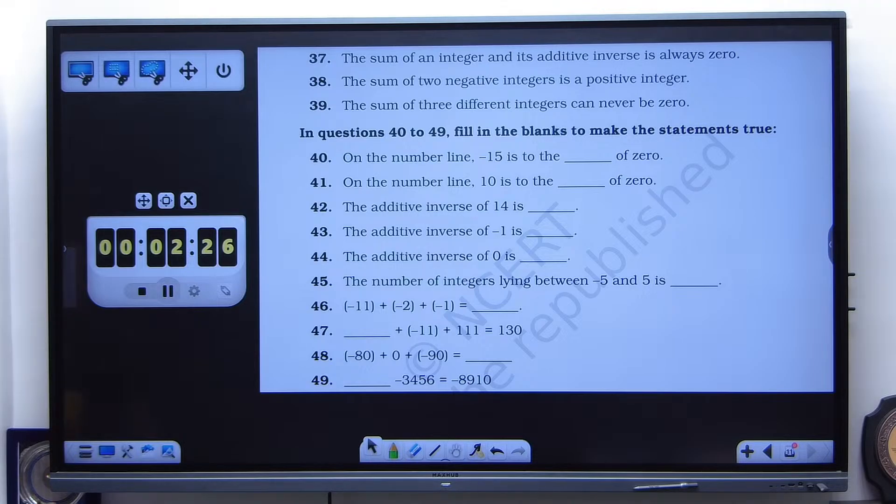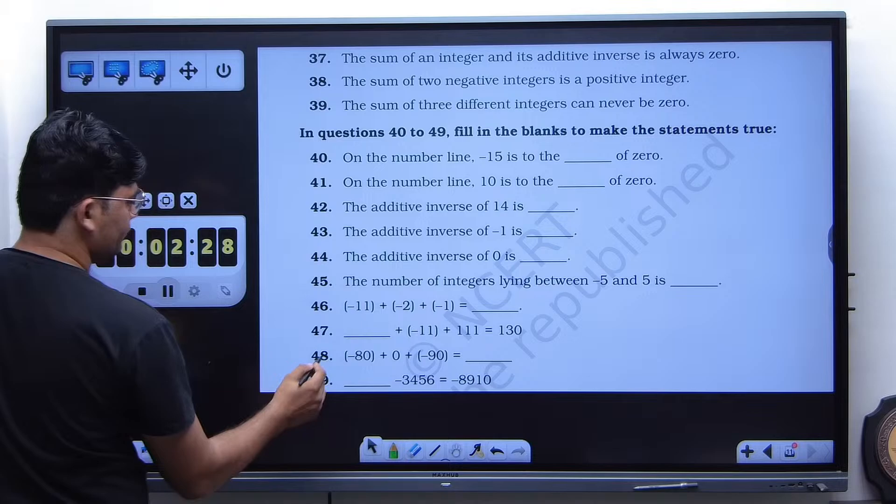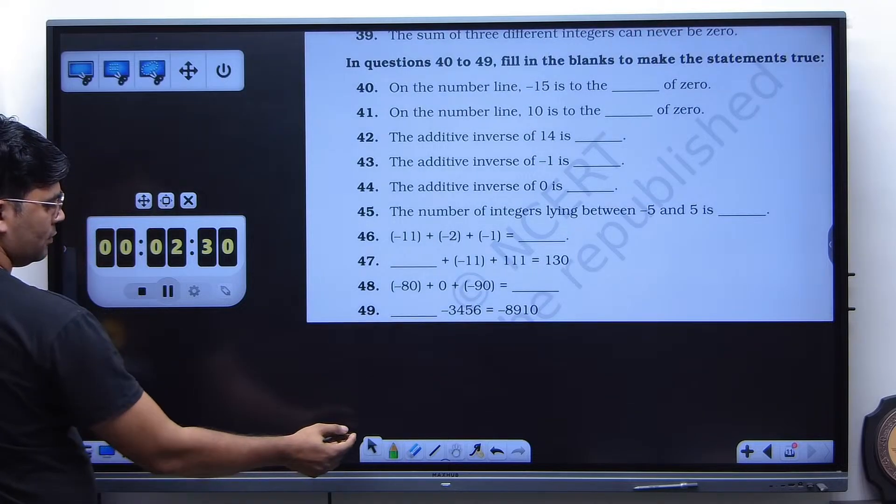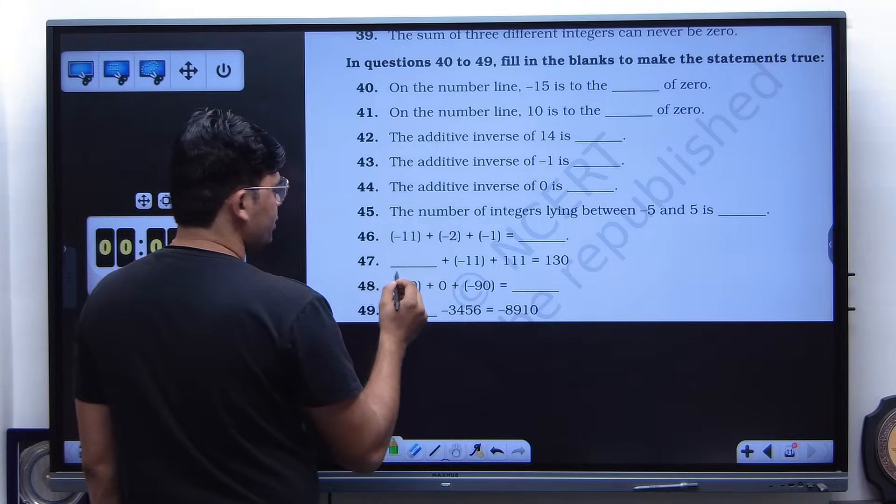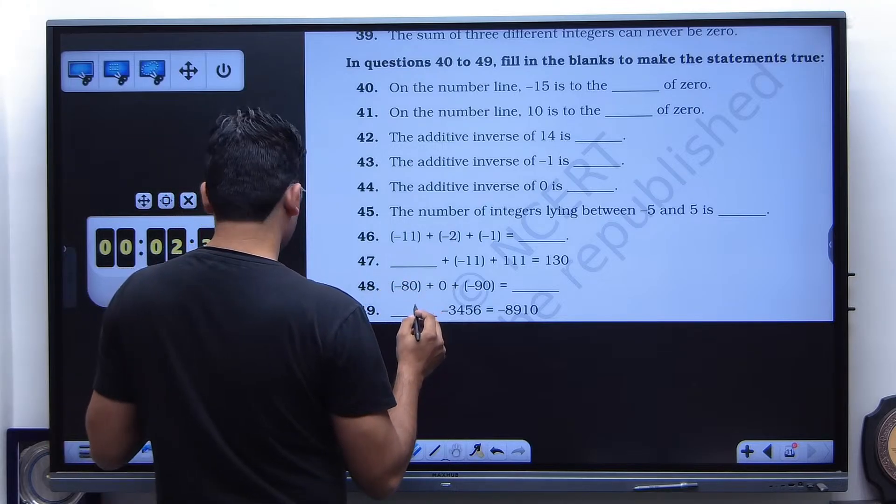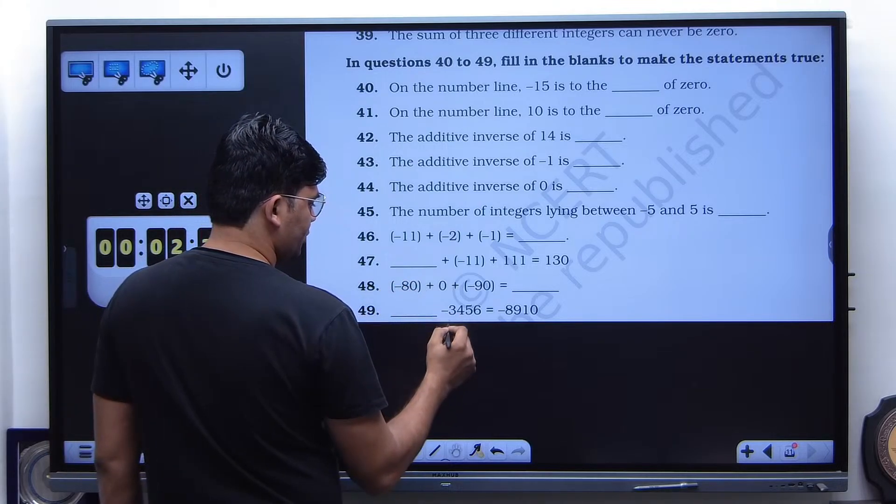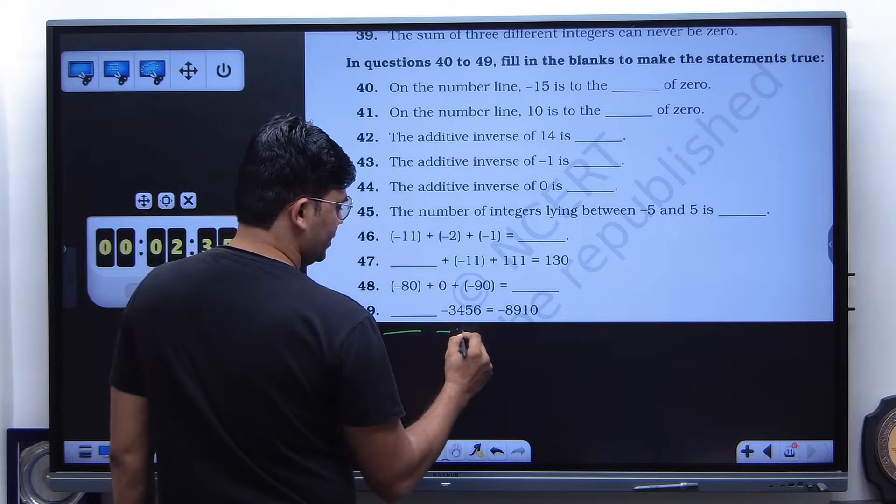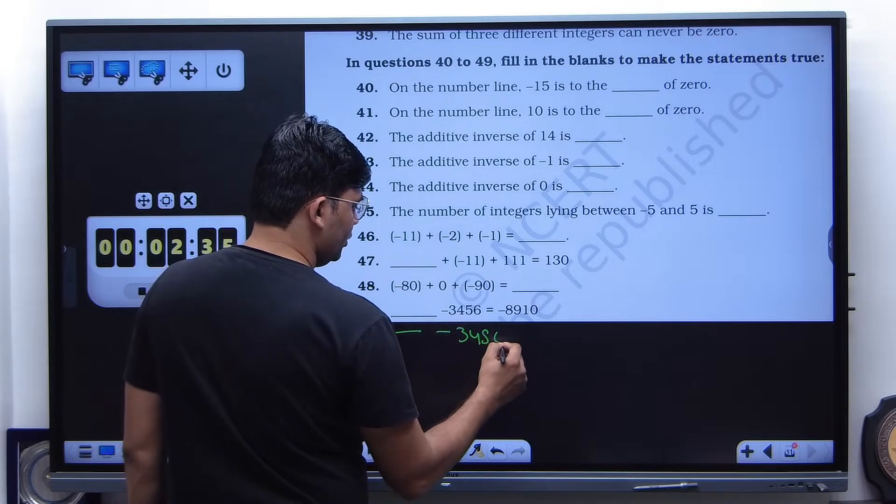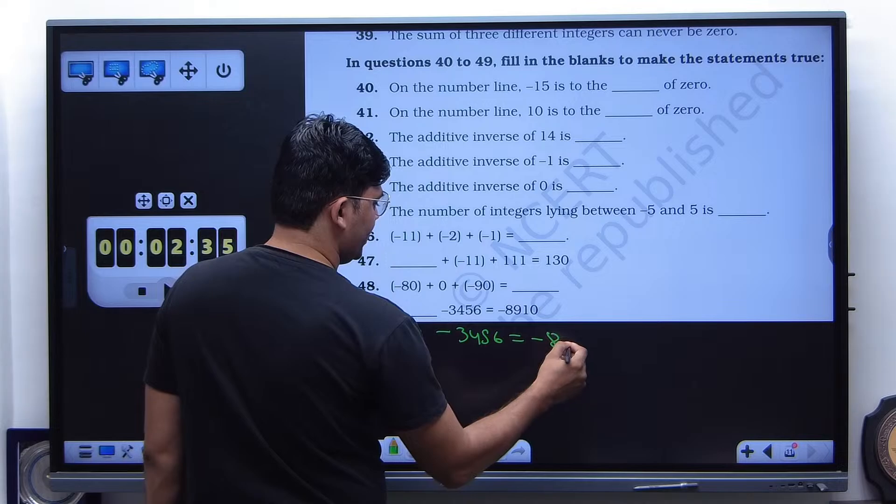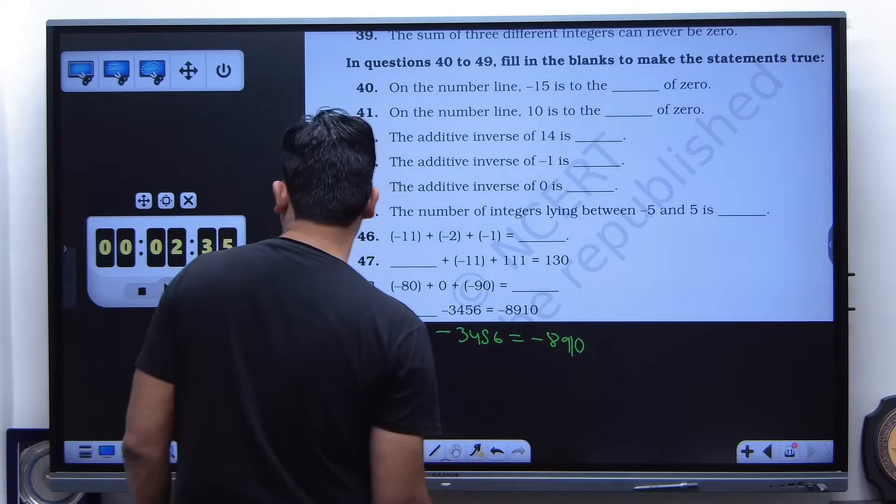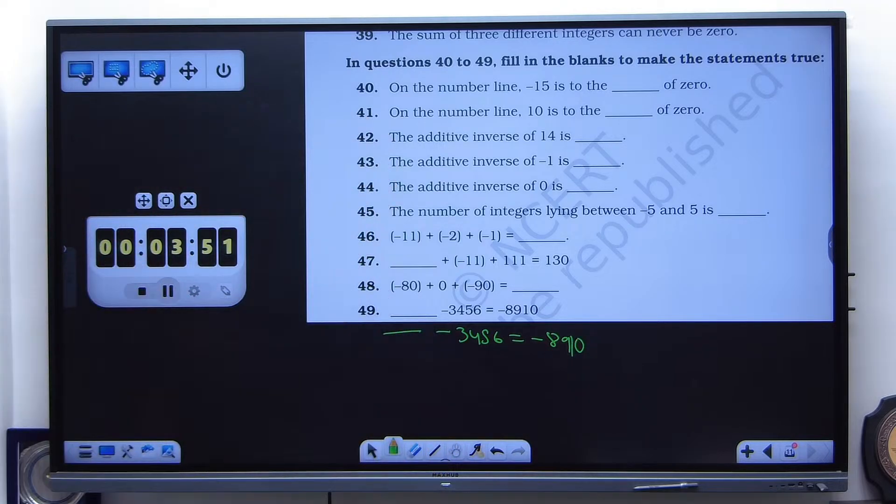Yes. So which question? 49. 49 is there, dash minus 3456 is equal to minus 8910. Okay. So yes, I am done.